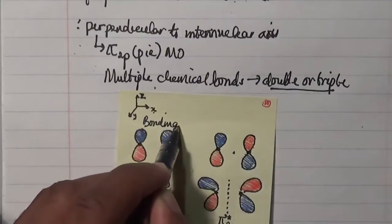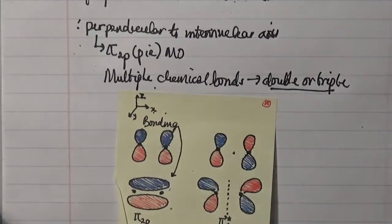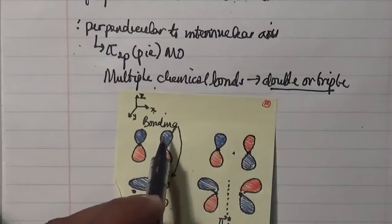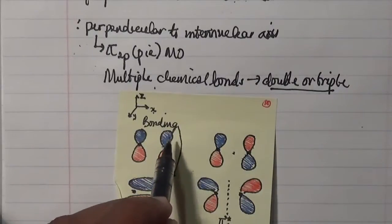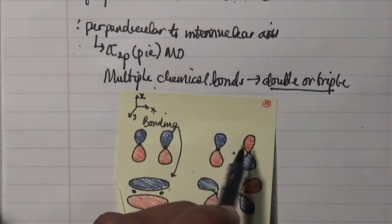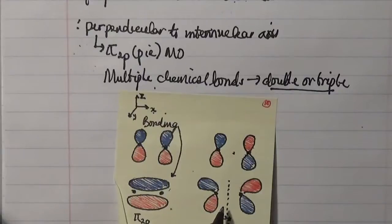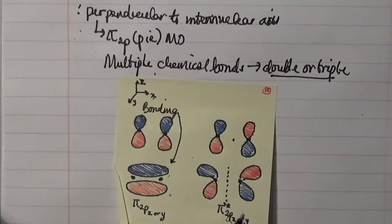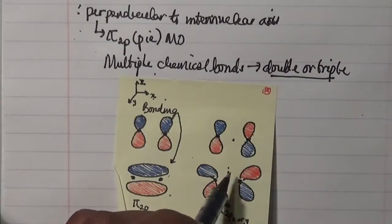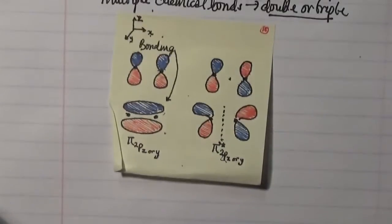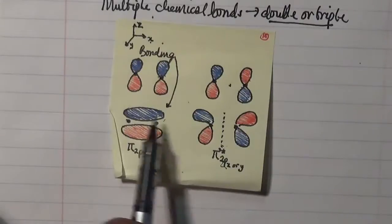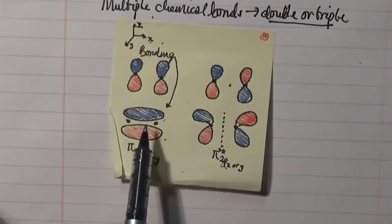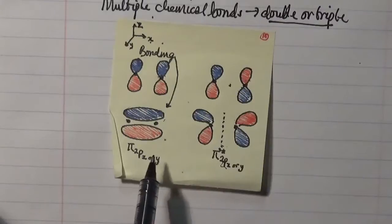For the antibonding case, the orbital is flipped so the negative lobe comes up and the positive comes down, resulting in a pi star 2pz or y antibonding orbital with a nodal plane between the two nuclei. Note that the bonding pi 2p is much lower in energy than the antibonding pi star 2p.